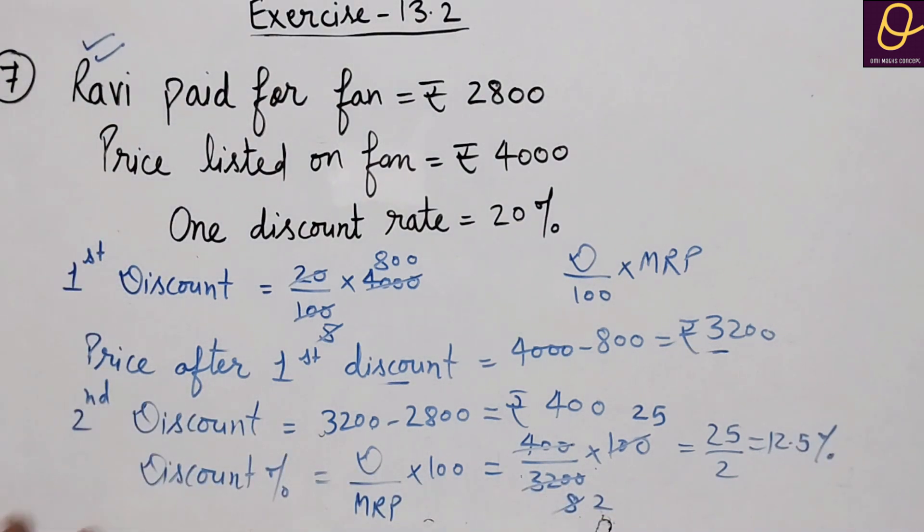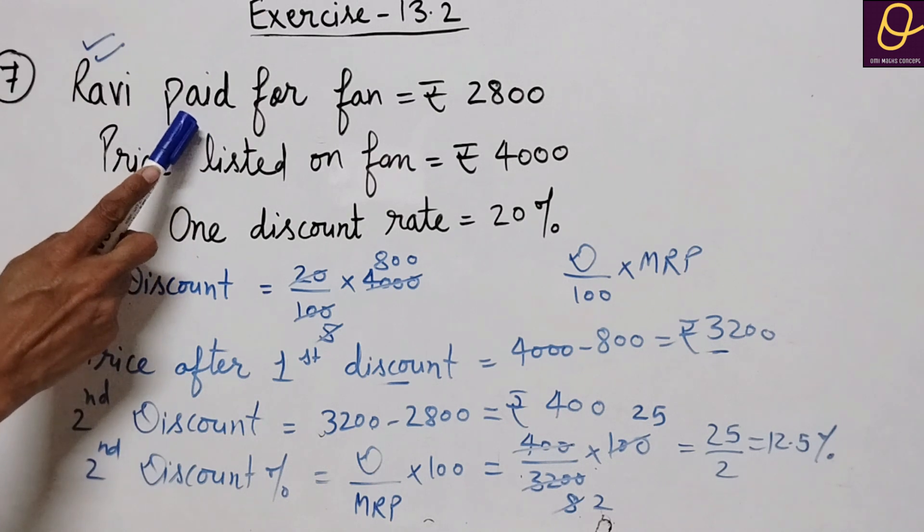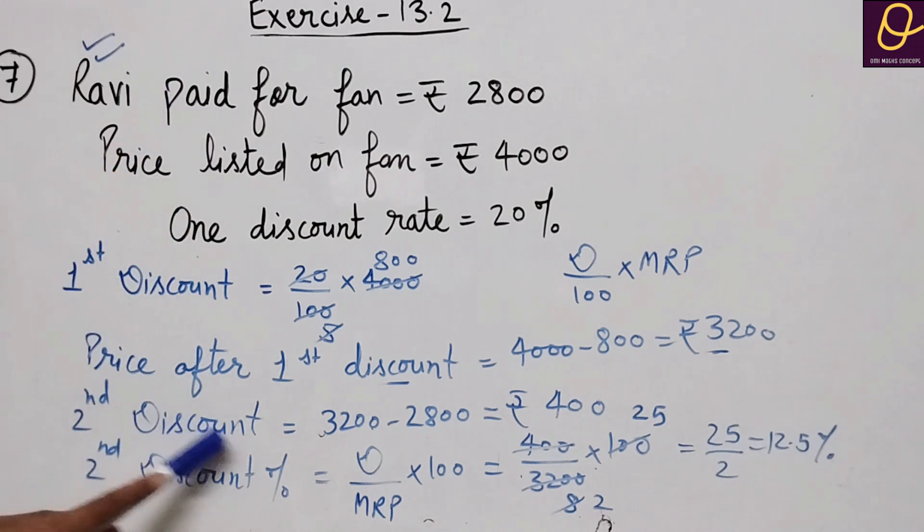That is equal to twelve point five percent. This is our answer. The second discount rate, first one was given as 20%, so we found the second discount rate.